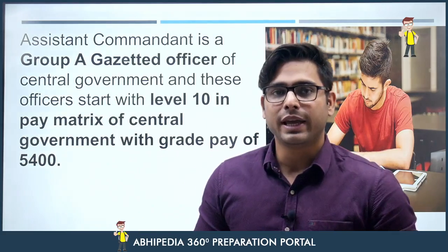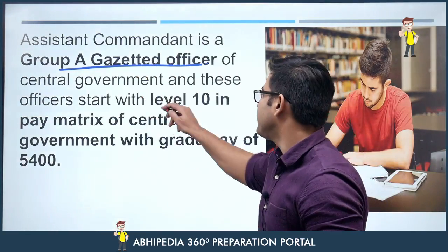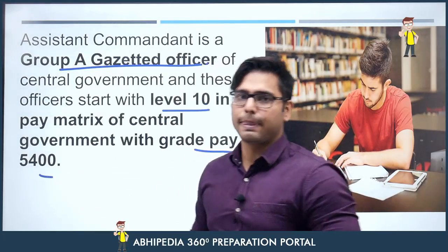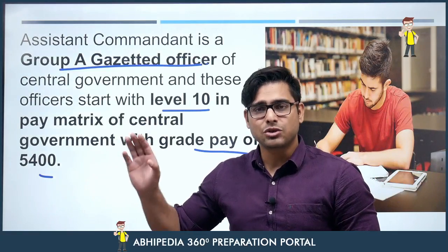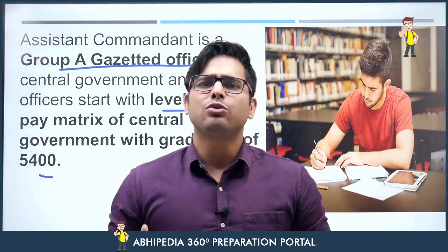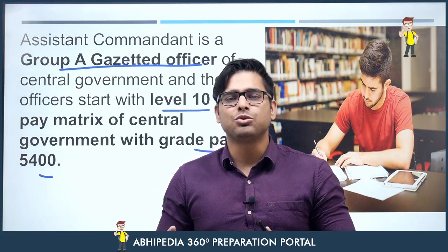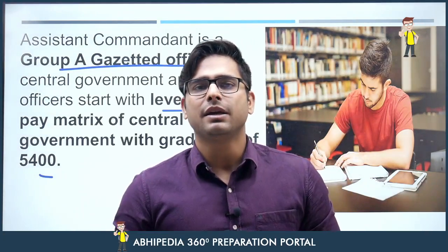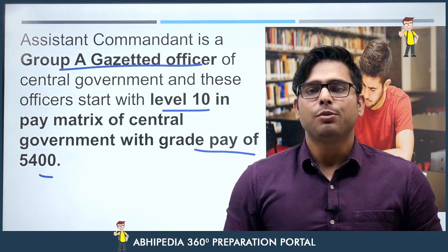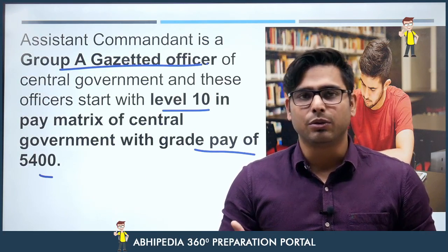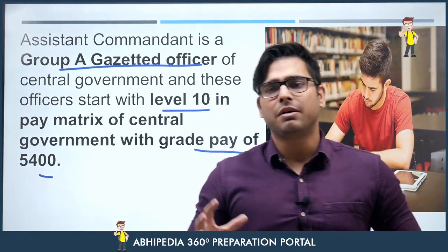You need to know about the Assistant Commandant job. It is a Group A Gazetted Officer post under the central government. The pay scale is Level 10 with a grade pay of 5400, so the salary is very good. State DSPs have power, but within CISF and CRPF, Assistant Commandants have enormous responsibility as well as power. It's a combat-oriented role with real authority.